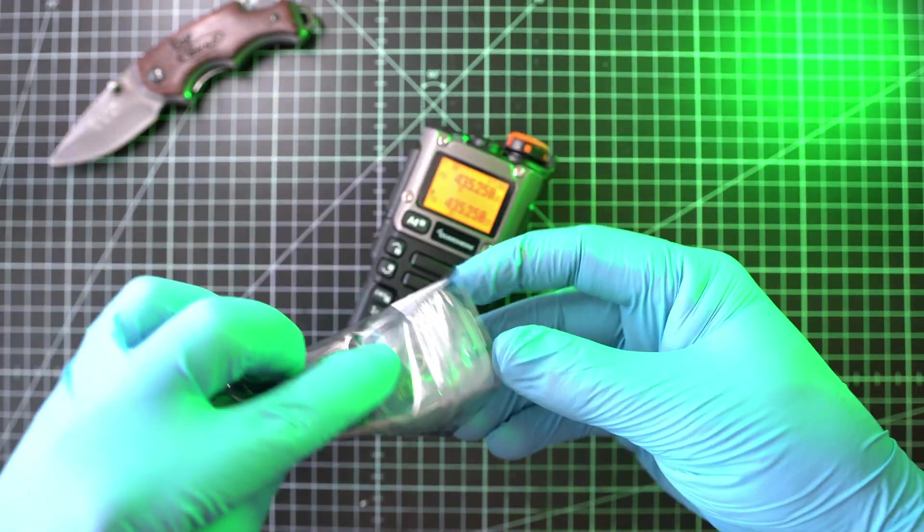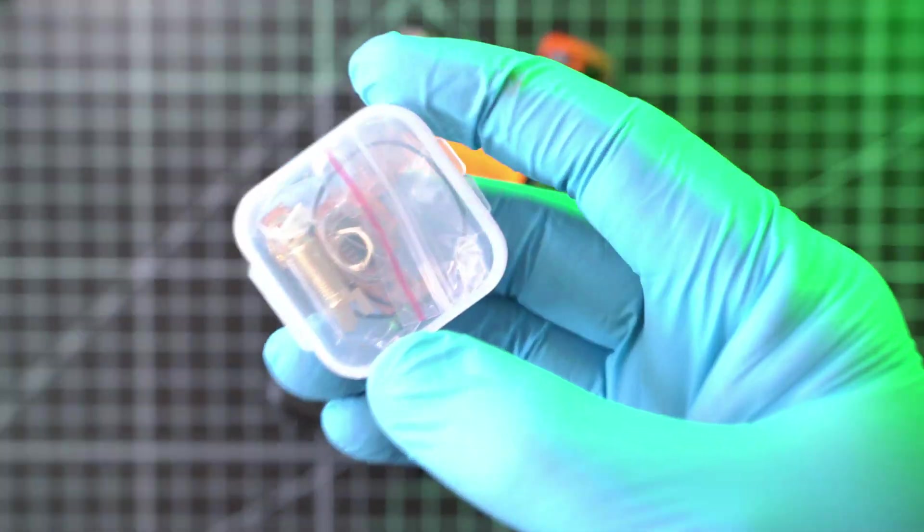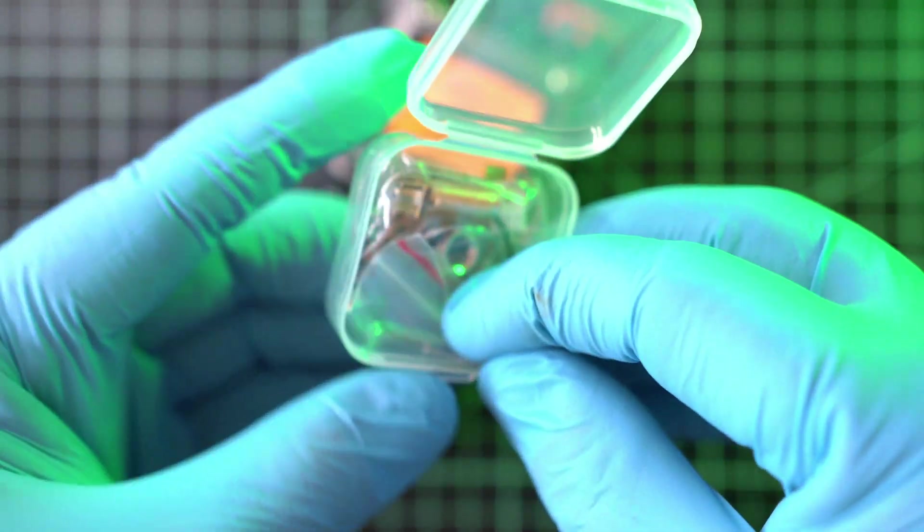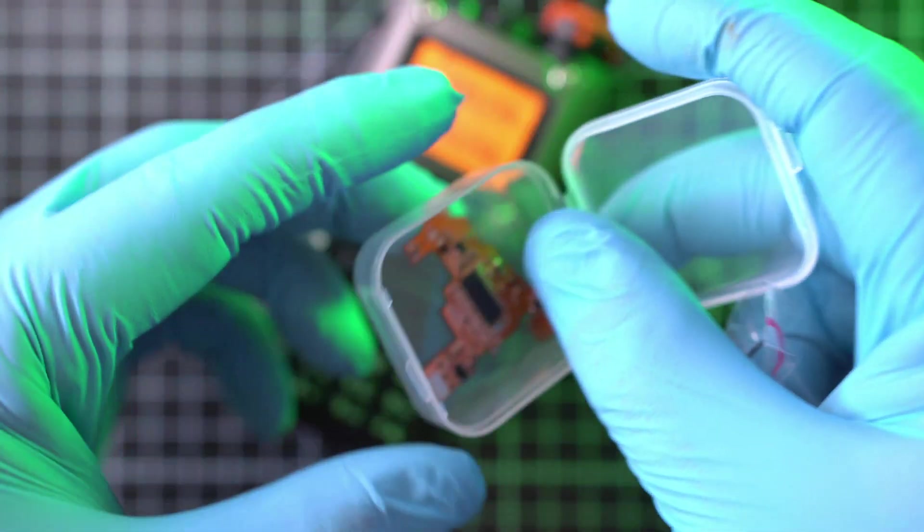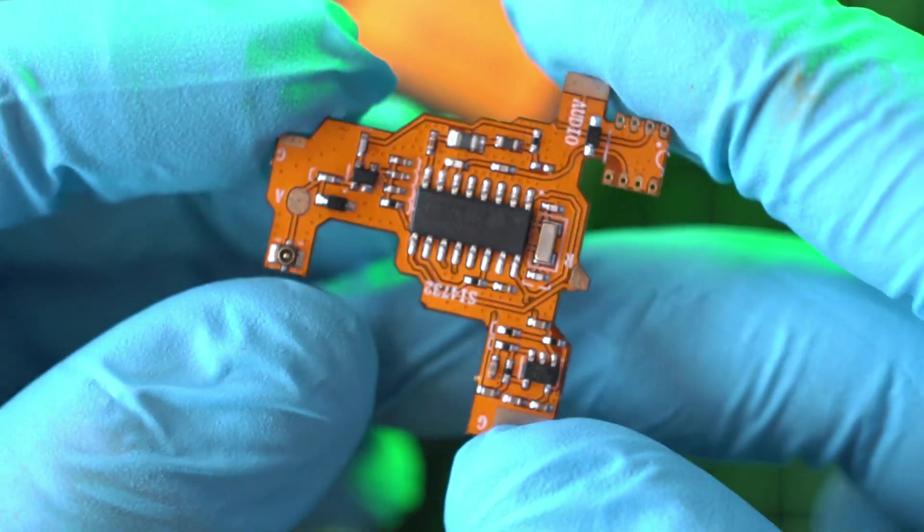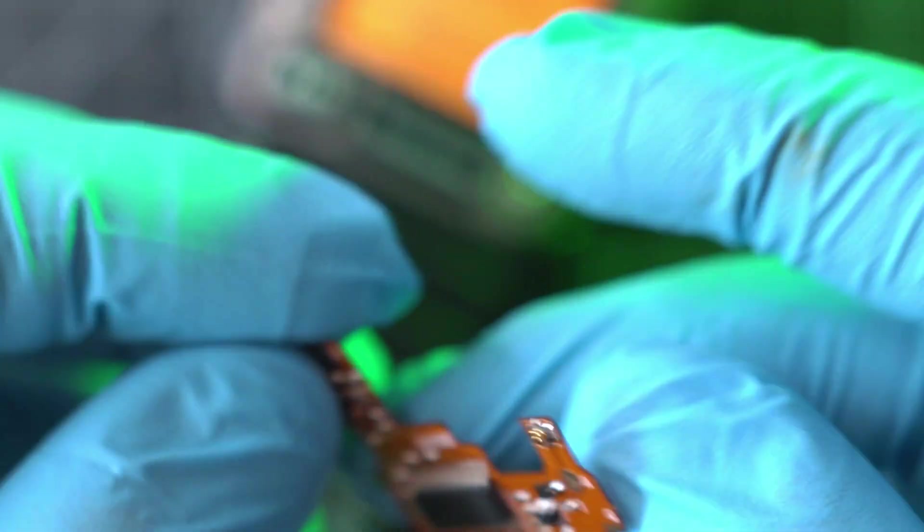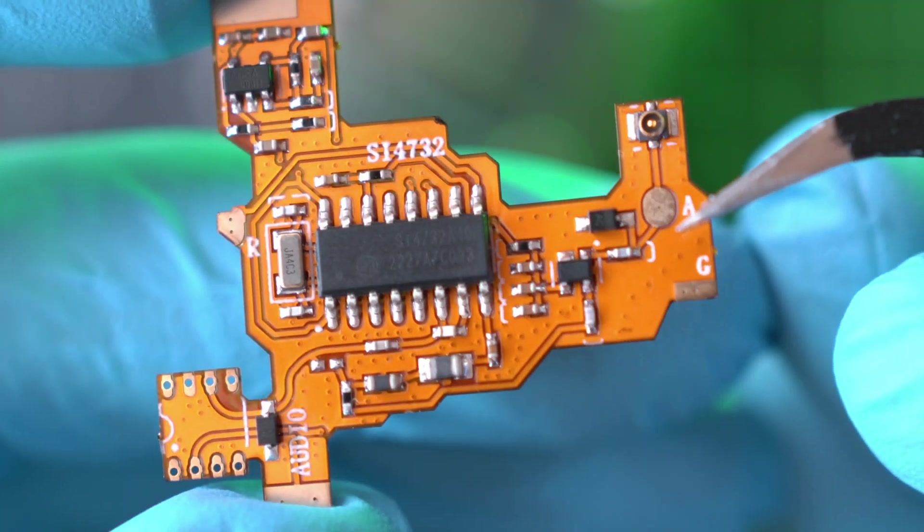The mod kit comes in this bag and plastic case, very well protected. Link is in the description below. This is a new FlexiBoard with tiny IPX antenna connector and some additional components for AM receiving.